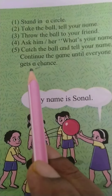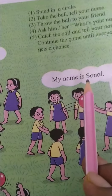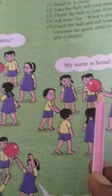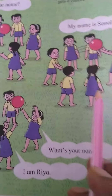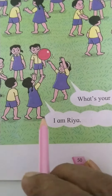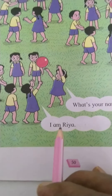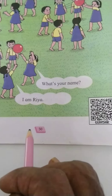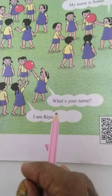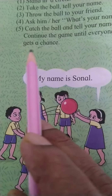What's your name? My name is Sonal. Catching ball. Throwing ball. What's your name? Throwing ball. Catching ball. I am Ria. In this way, continue until everyone gets a chance.